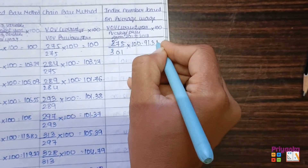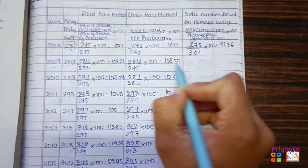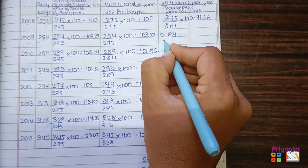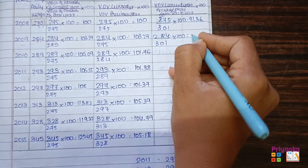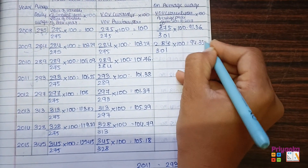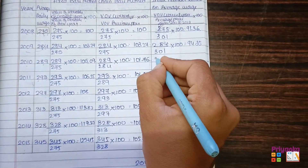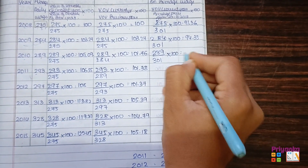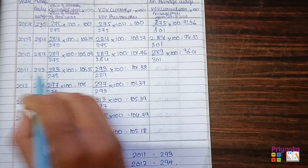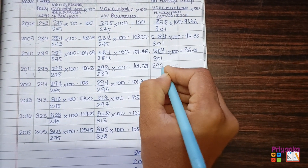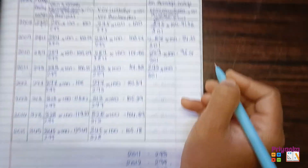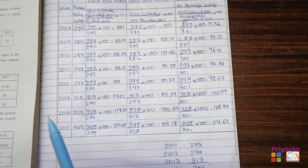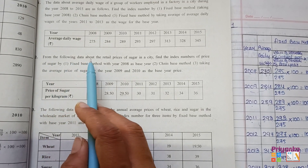The base for the index number based on average wages is 301. For 2008: current year 275 divided by 301, multiply by 100 — we get 91.36. For 2009: 284 divided by 301, multiply by 100 — we get 94.35. For 2010: 289 divided by 301, multiply by 100 — we get 96.01. For 2011: 293 divided by 301, and we'll continue for the remaining years. This completes the solution using all three methods for Question 1.